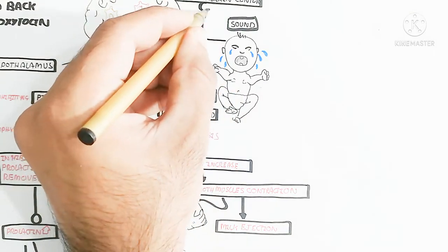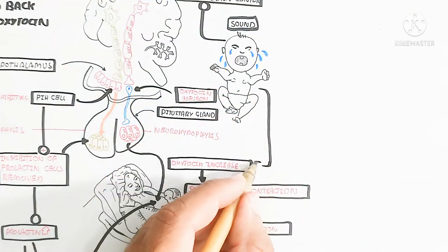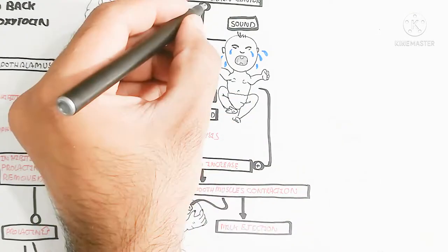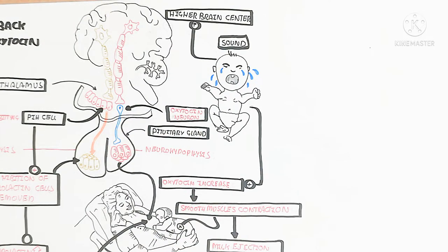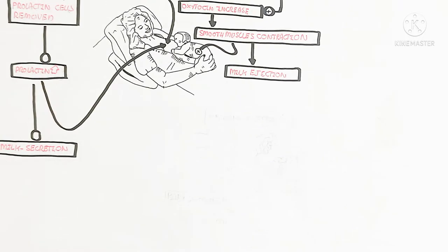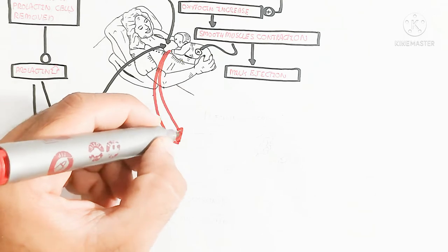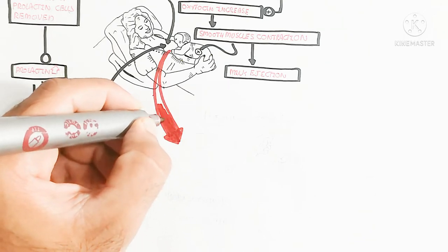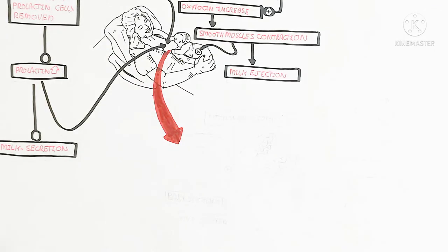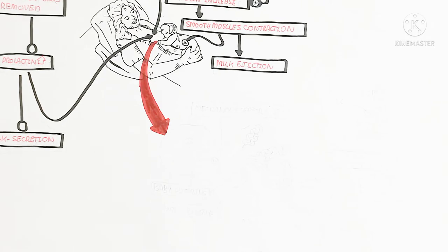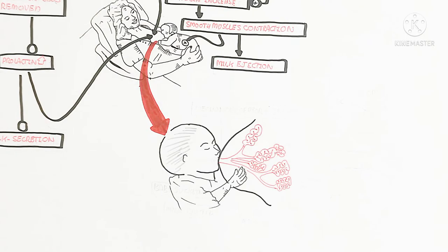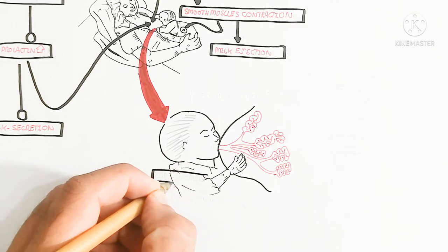Hearing the weeping child stimulates oxytocin, increasing pair bonding between the female and her young ones and causing smooth muscle contraction again for milk ejection. Prolactin plays an important role in the production of milk, while oxytocin drives the secretion of milk through smooth muscle contraction.